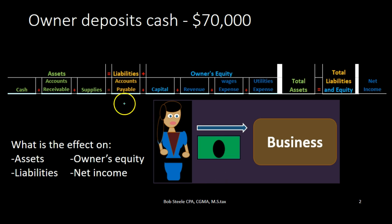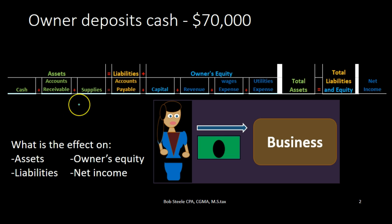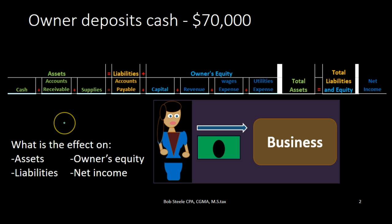We will analyze the transaction using the accounting equation: assets, liabilities, and owner's equity. We have subcategories of assets — we need to memorize assets including cash, accounts receivable, and supplies. Liability accounts include accounts payable. Owner's equity accounts include capital. Then the income statement includes revenue and all expenses. Every transaction will have at least two accounts affected, in such a way that the accounting equation — assets equal liabilities plus owner's equity — will remain in balance.